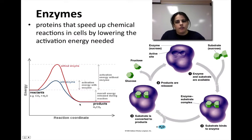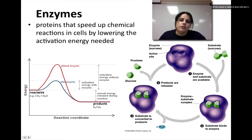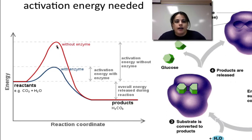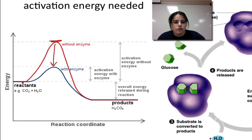I want to focus on one of the functions of proteins, which is enzymes. Enzymes are proteins that speed up chemical reactions in the cell, and they do this by lowering the activation energy needed. A chemical reaction won't occur unless it has a certain amount of energy. Looking at this graph — the red line shows the high energy level required without an enzyme. Enzymes reduce the amount of energy needed, speeding up chemical reactions. The blue line shows that with an enzyme present, reactions happen at a much greater pace.